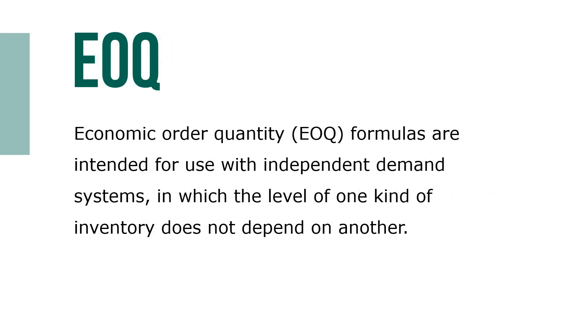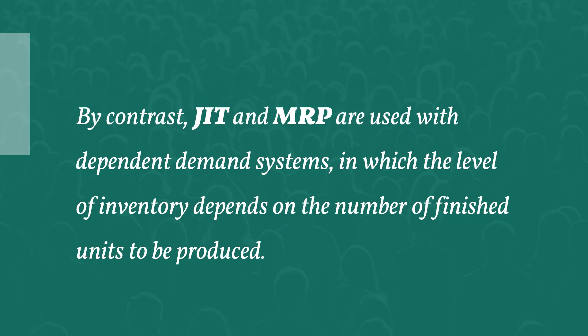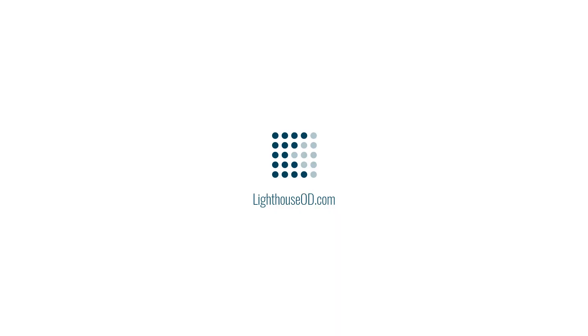What inventory management system should you use? EOQ formulas are intended for use with independent demand systems, in which the level of one kind of inventory does not depend on another. By contrast, just-in-time and MRP are dependent demand systems, in which the level of inventory depends on the number of finished work units to be produced.